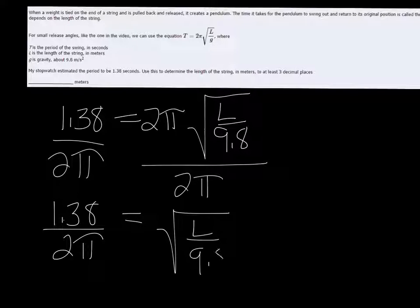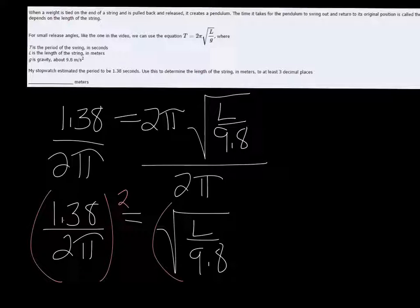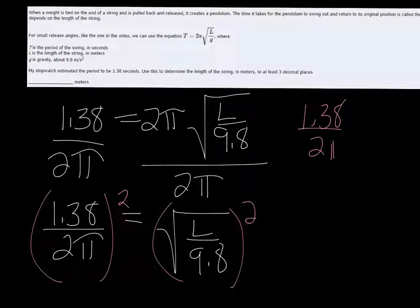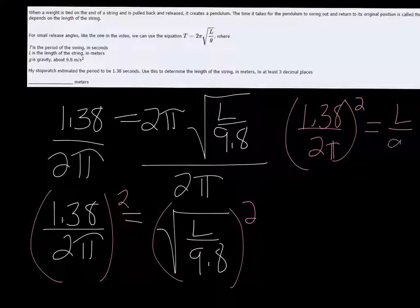Once the radical is isolated, you can square both sides to get rid of it. So we have 1.38 over 2π squared is equal to l over 9.8.